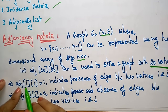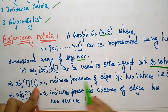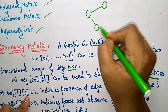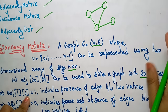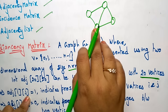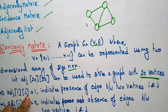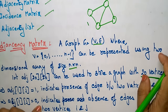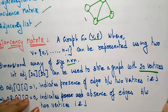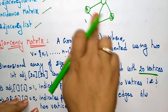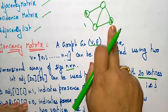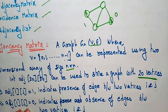If adjacent[i][j] is equal to 1, it indicates the presence of an edge between two vertices i and j. Whenever there is a connection between two vertices, adjacent[i][j] = 1. Suppose if adjacent[i][j] is equal to 0, it indicates the absence of an edge between two vertices. For example, if there is no direct edge from a to b, then adjacent[i][j] is 0.